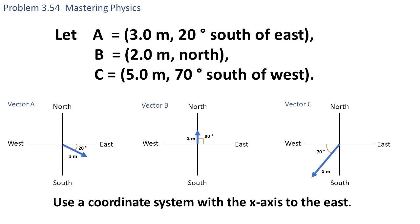We have three vectors A, B, and C, and their magnitudes and directions are given.